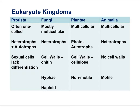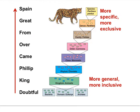Before looking at specific classifications, let's examine the characteristics of the four kingdoms within the Eukarya domain. Protists: one-celled, heterotrophs and autotrophs, sexual cells lack differentiation. Fungi: mostly multicellular, heterotrophs with varied feeding, cell walls of chitin, they have hyphae, and their body is haploid. Plants: multicellular, photoautotrophs, cell walls composed of cellulose, mostly non-motile. Animalia: multicellular, heterotrophs, no cell walls, and motile.